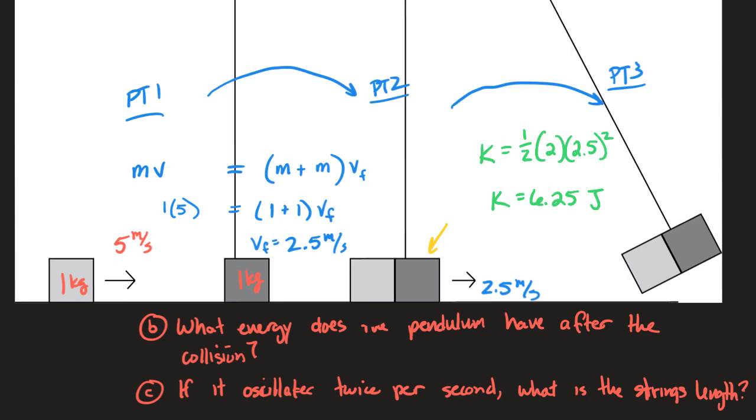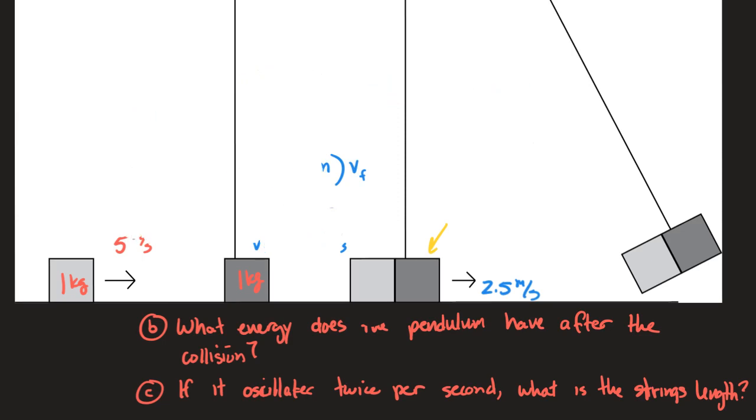So question c is the only part of this that has to do with simple harmonic motion. So get rid of all these things here and look at question c, which states if it oscillates twice per second, what is the string's length. Now this is the part that in sixth period people had a little bit of difficulty kind of figuring out what I was trying to say here. But I'm giving you the frequency - I'm saying it's two oscillations per second, or two hertz.